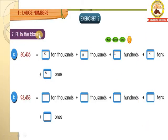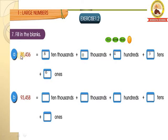Now the 7th one: fill in the blanks. Exercise 1.2. They have given 80,436. We have to write which number is in the 10,000th place, 1000th place, 100th place, 10th place, and 1st place. 8 is in the 10,000th place. 0 is in the 1000th place. 4 is in the 100th place. 3 is in the 10th place. 6 is in the 1st place, so write down 6.